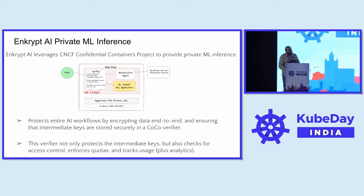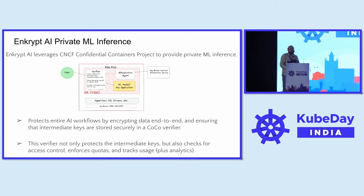How is Encrypt AI leveraging CNCF projects to achieve the objective? You have your user, then a Kubernetes pod. We have our ML model inside the pod and an attestation agent. As Pradipta mentioned about implicit trust — the attestation agent confirms the workload is indeed the workload that's supposed to be running. We also have a verifier that ensures end-to-end data is encrypted. Whatever data is interacting with this pod is going to be encrypted. It protects the entire AI workflow and is responsible for key exchange — nobody else can access these keys except the verifier and the end user.